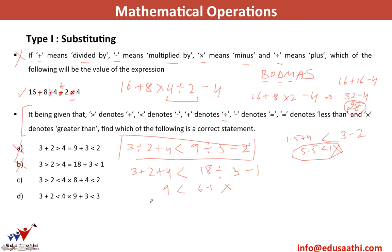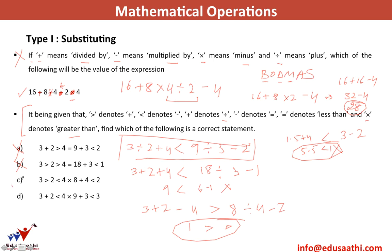Moving to option C: 3 greater-than 2 becomes 3 plus 2 minus 4. The multiplication sign denotes greater than, so I have greater than 8 divided by 4, and less-than denotes minus. This gives 3 plus 2 minus 4 = 1, and 8 divided by 4 minus 2 = 0. So 1 is greater than 0 — yes, this equation holds. I mark C as the right option. The key tip: don't waste 30-45 seconds reading the full question; go straight to the answer options and look up symbol meanings as needed.